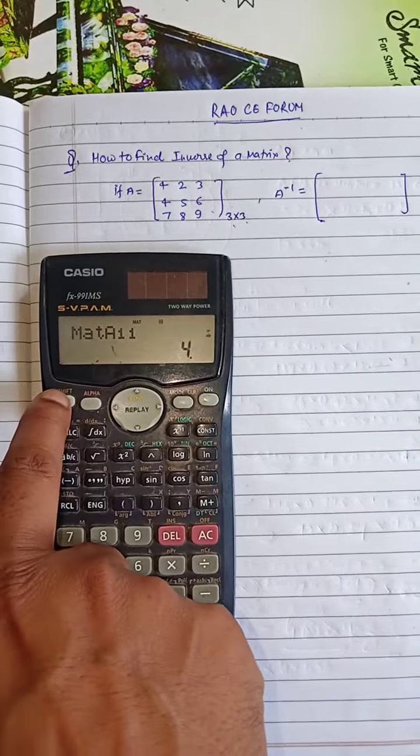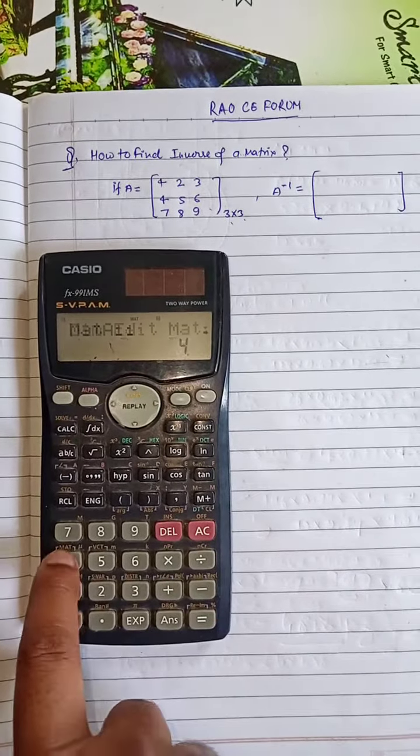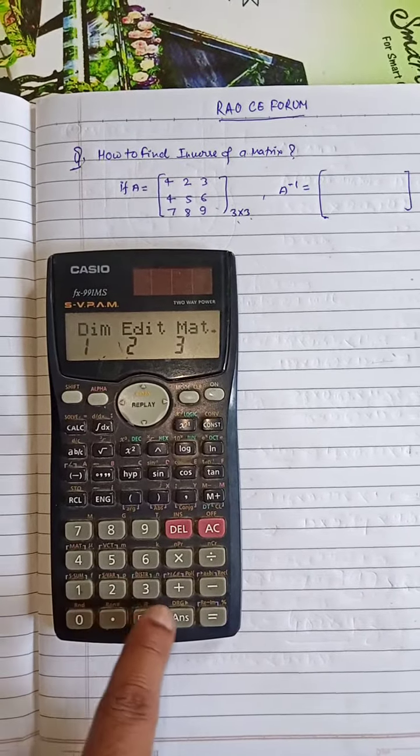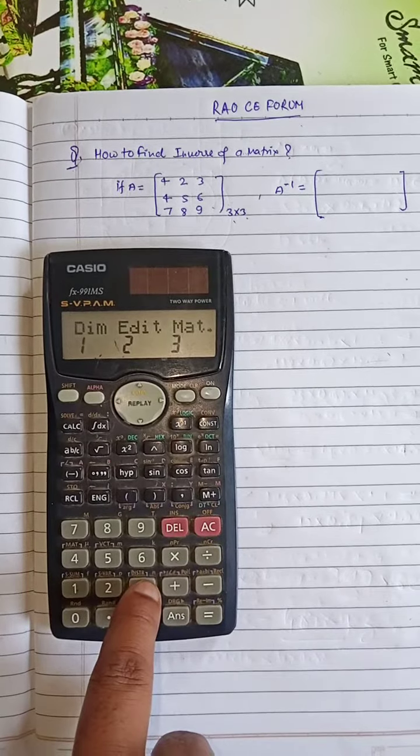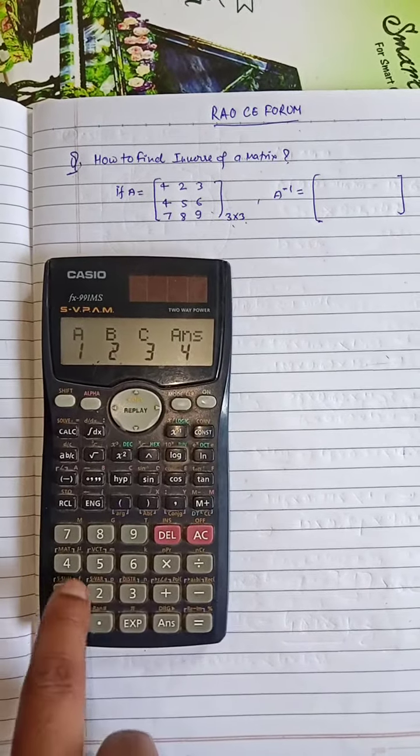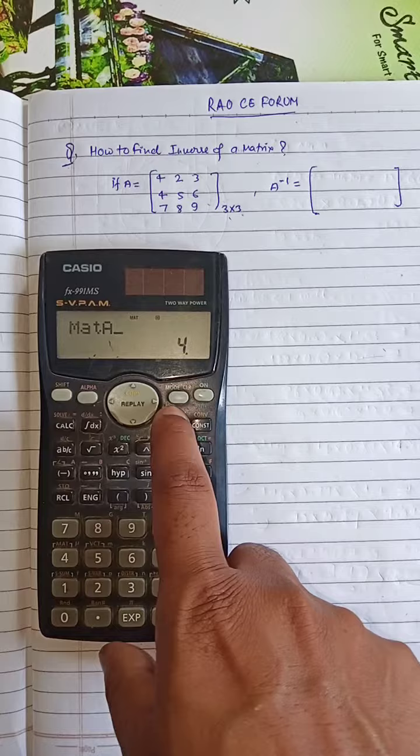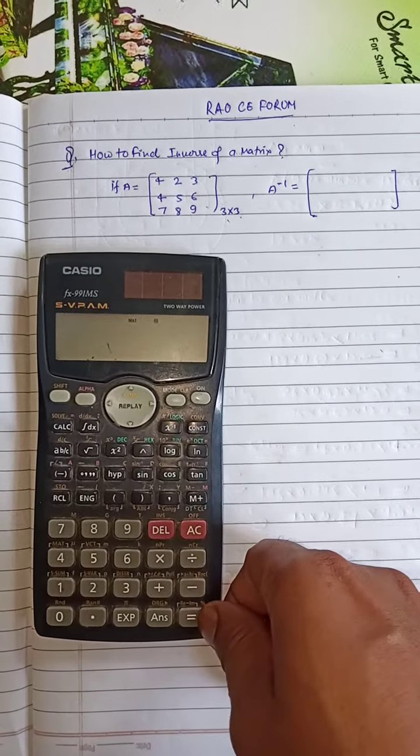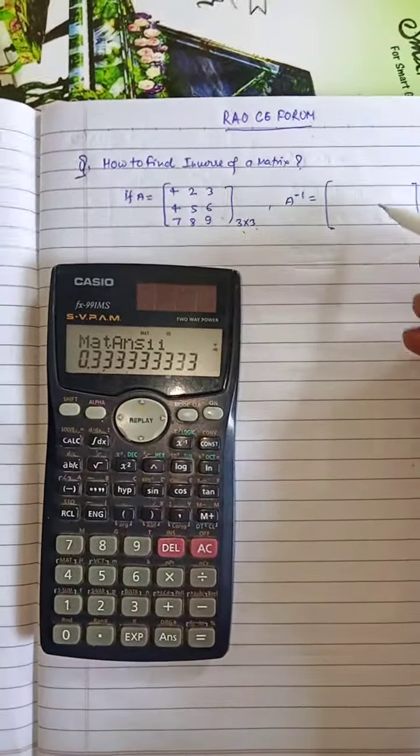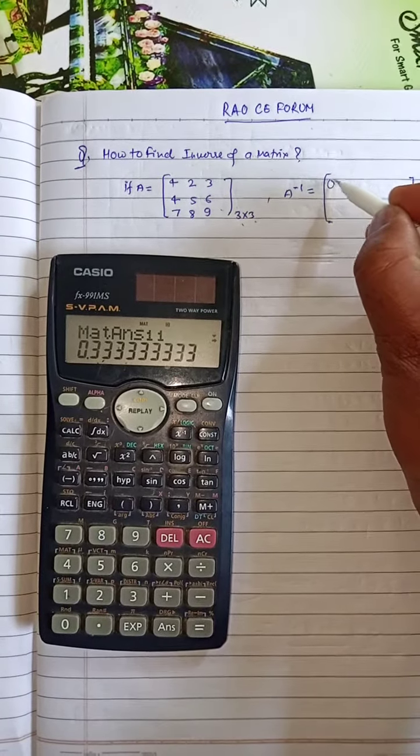Press SHIFT MAT, then 3, then 1 for inverse. This displays the inverse of the matrix. First element is 0.33, then minus 0.66, then 0.33.